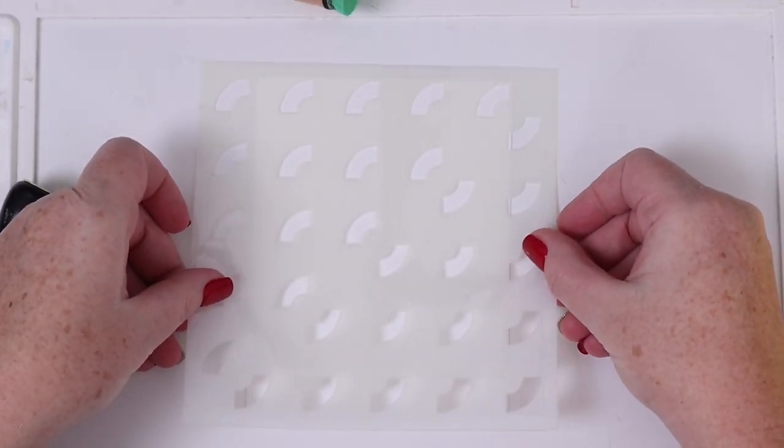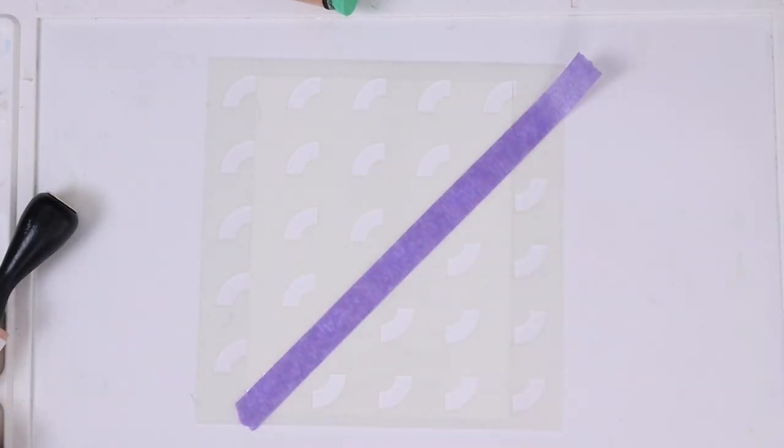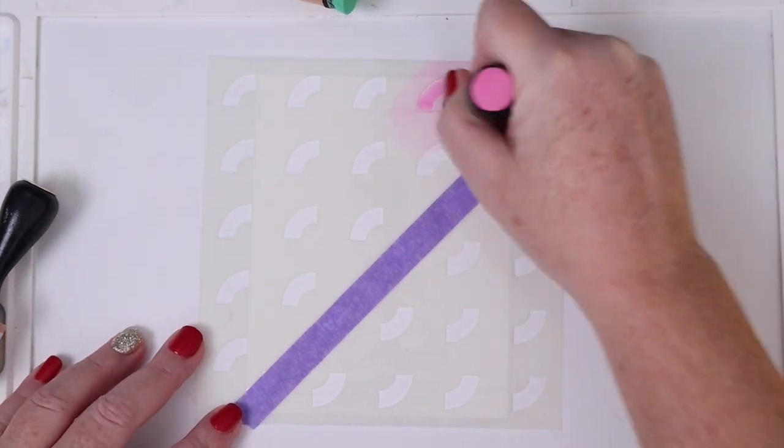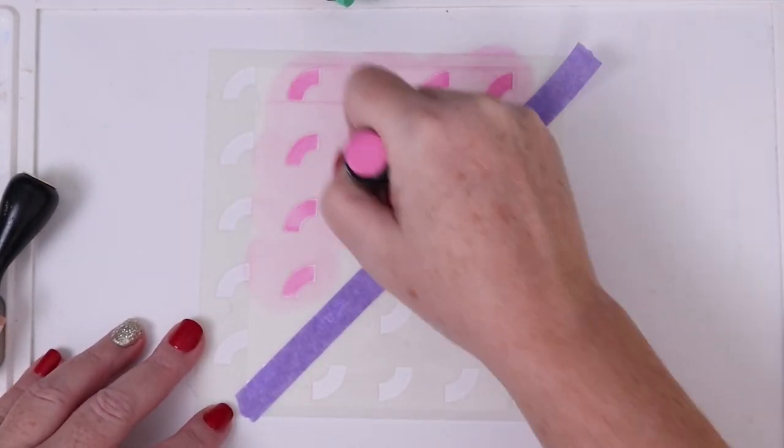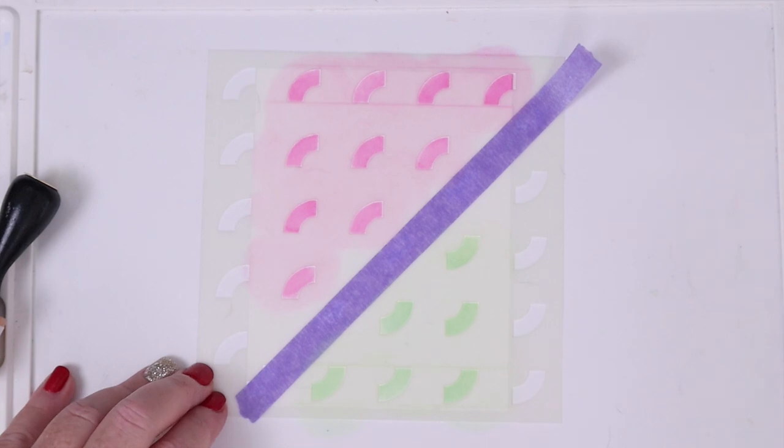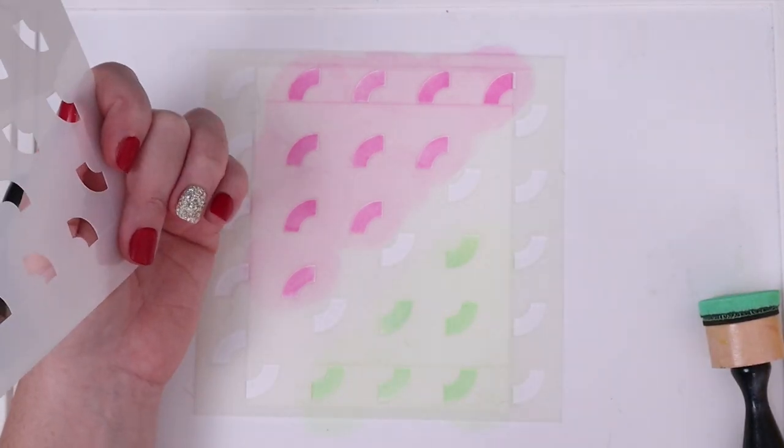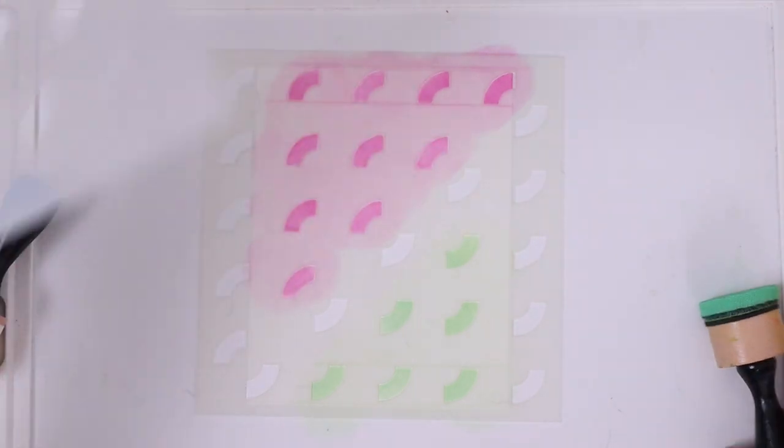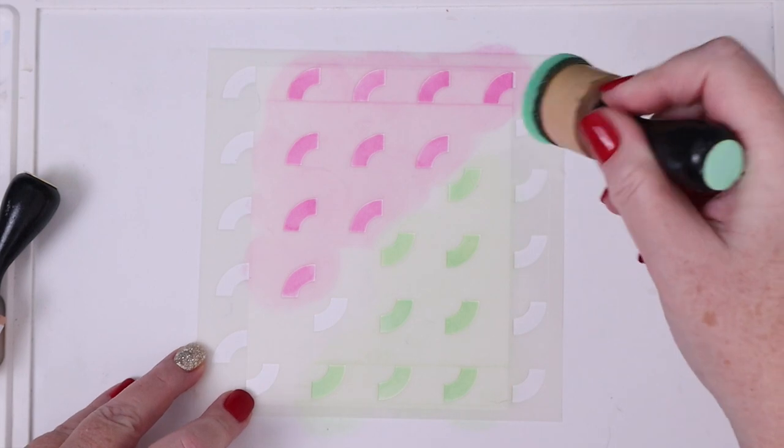I taped off part of the stencil to make sure I only blended Picked Raspberry on the upper left arcs, then I blended Cracked Pistachio on the bottom right arcs. I needed to remove the tape because I had covered up some of the arcs that needed to be green. You don't really need to tape off the sections if you're using small foam blenders like this, because it's pretty easy to blend the arc that you want as they are far enough apart.